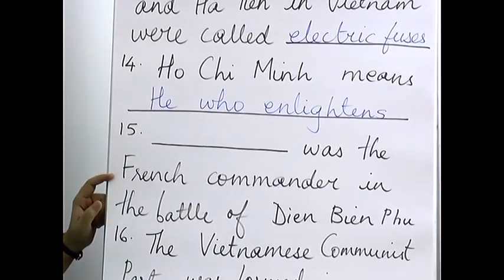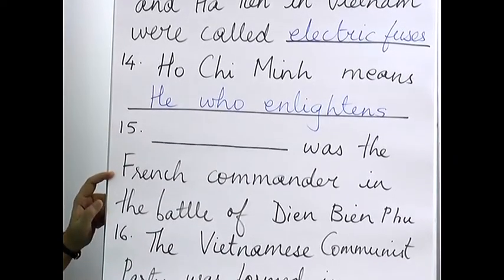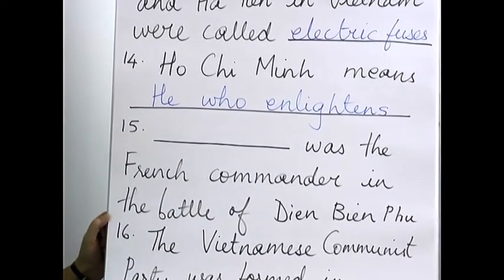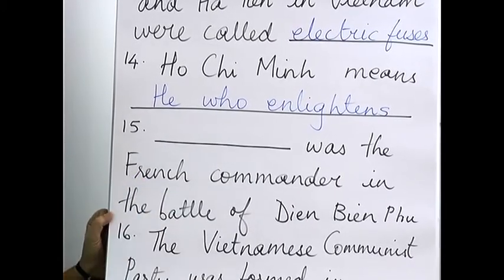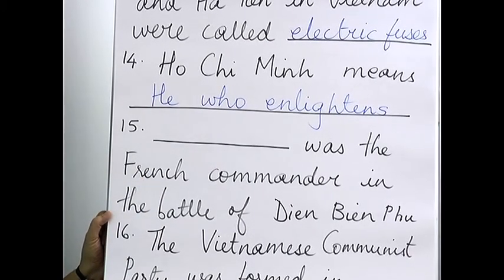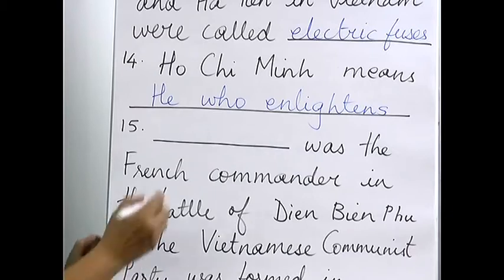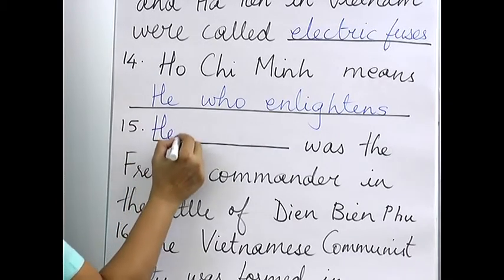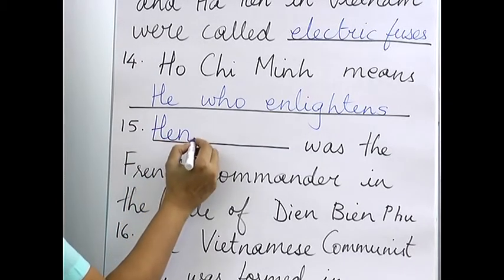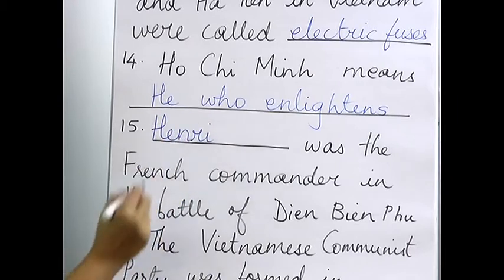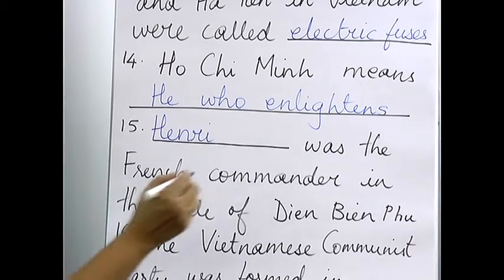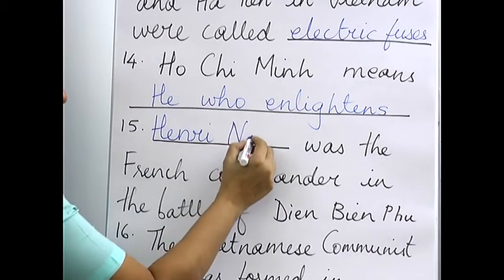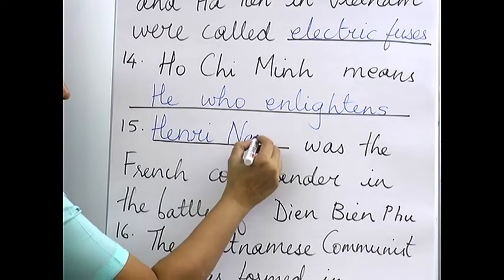Fifteenth: someone was the French commander in the Battle of Dien Bien Phu. You already know the French were defeated there. In English we pronounce this as Henry, but in French it is pronounced Henri — Henri Navarre.